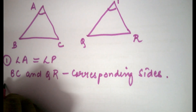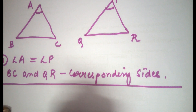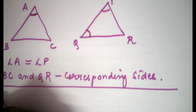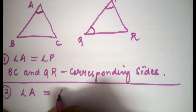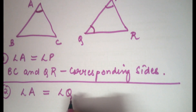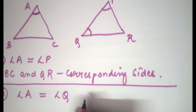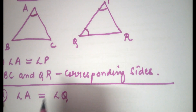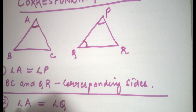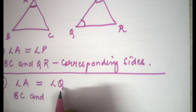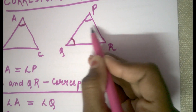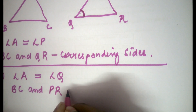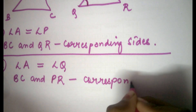In a second example, we assume angle A equals angle Q. Corresponding sides are the sides opposite to equal angles. The side opposite to angle A is BC and the side opposite to angle Q is PR. Hence, BC and PR are corresponding sides in this second example.